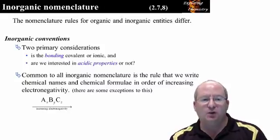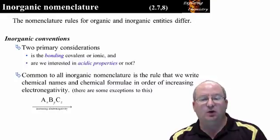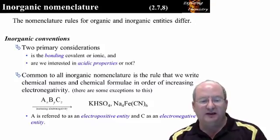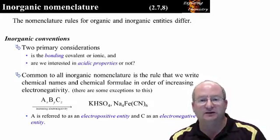What is common to all inorganic nomenclature is that the elements in an inorganic entity are written in order of increasing electronegativity. So in the example, the first element is most electropositive, and the last is most electronegative.